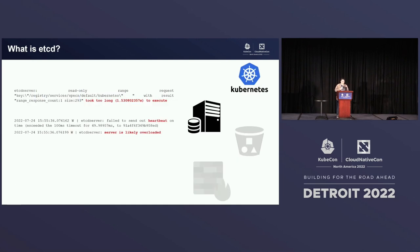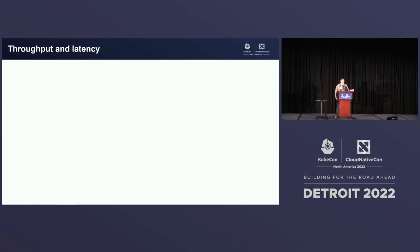Even though you don't directly talk to etcd, you can still see issues there. These are two examples: one from the etcd log saying that a request took too long to complete, and some other logs in the kube API server saying that there were some hard limits that were missed, indicating that the server is likely overloaded. But what does it mean exactly to be overloaded in etcd terms?